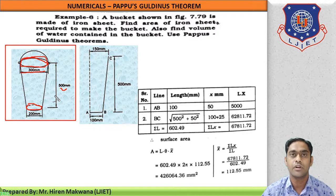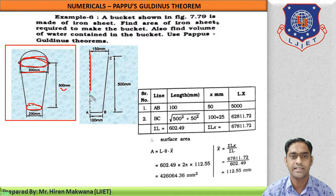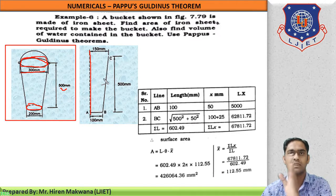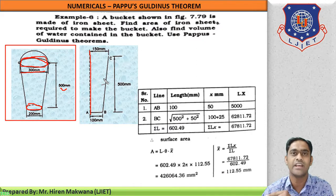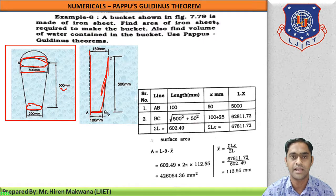First, we have to calculate the area of iron sheet required to make the bucket. According to theorem number 1, for finding the area we have to take length as the revolving figure. You can see in this figure the axis of revolving about which the lines are to be rotated. Because we have to find area, we rotate lengths. There are two lines: the first is an inclined line and the second is a horizontal line.